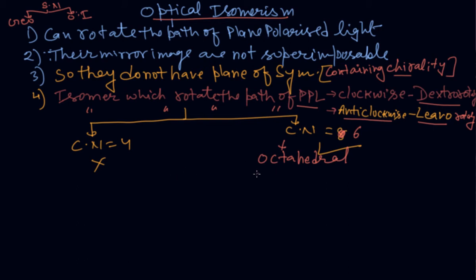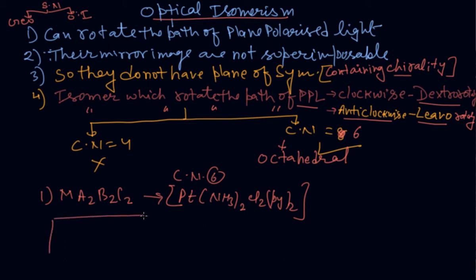And some of their examples with coordination number 6 are, number one, M(A)₂B₂C₂. Then Pt(NH₃)₂Cl₂(pyridine)₂. This is an example for you. If I will take this one, this is platinum and 6 ligands I have to attach: Cl, Cl, pyridine, pyridine, ammonia and ammonia. Now draw its mirror image.